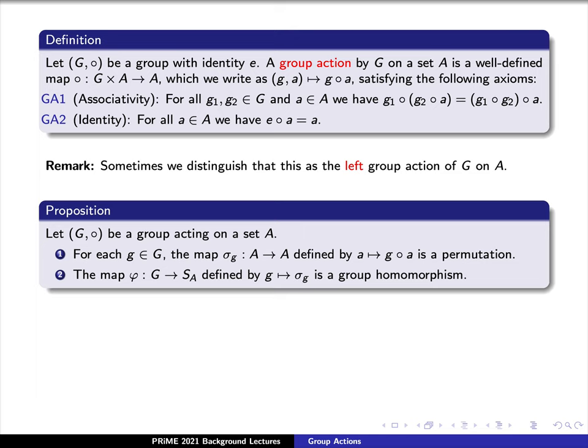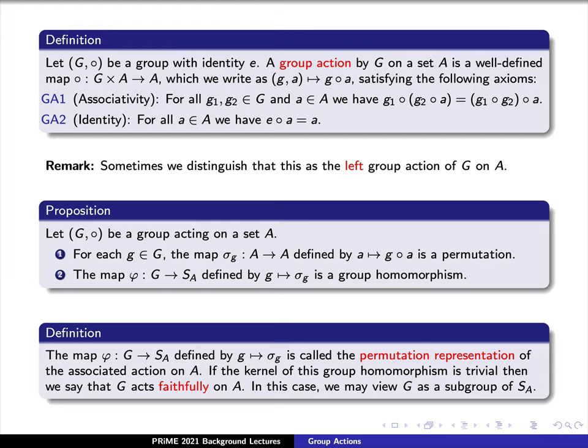Here's the definition. The map phi, which goes from our group G to our permutations S sub A, defined by sending an element lowercase g to the permutation sigma sub g, is called the permutation representation of the associated action on capital A. If the kernel of this group homomorphism is trivial, then we say that G acts faithfully on our set A. In this case, we may view G as a subgroup of the set of permutations S sub A.